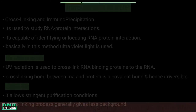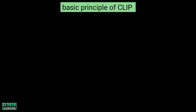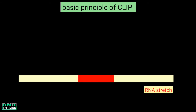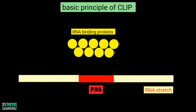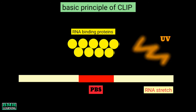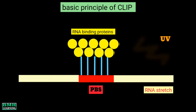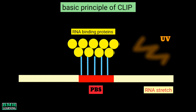Now let's talk about the basic principle of CLIP. Suppose we have a stretch of RNA molecule, and this is the particular site where we will see the protein interaction precisely. These are the proximal RNA binding proteins. Upon exposure to ultraviolet radiation, covalent bonds are formed between RNA and RNA binding proteins. You have to note one thing here: these bonds only occur at a specific position on the RNA molecule.